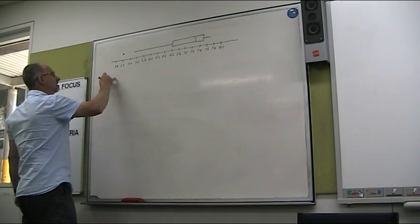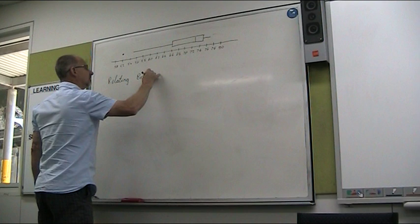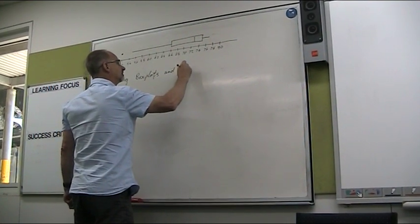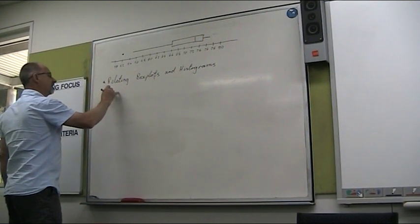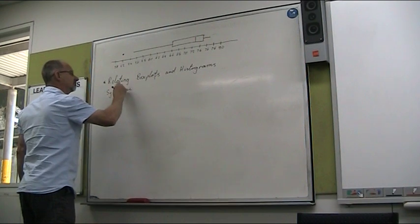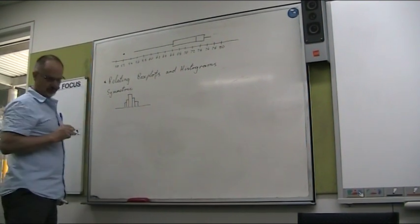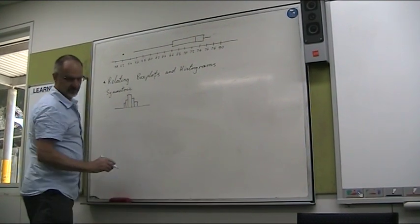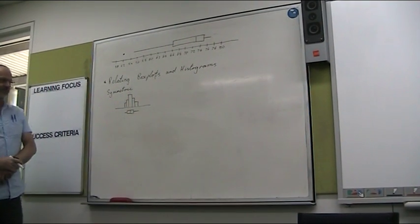Alright, so relating box plots and histograms. Alright, so if something is going to be symmetric, then our histograms are going to look something like this. And then our box plot. Not exactly like this, but our box plot looks something like that.